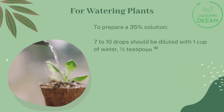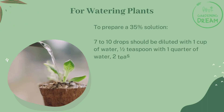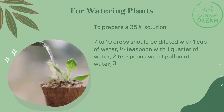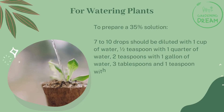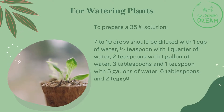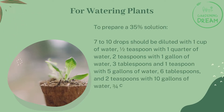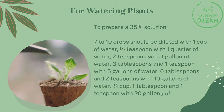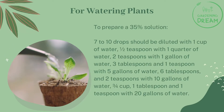For the 35% solution used for watering plants: seven to ten drops diluted with one cup of water; half teaspoon with one quart of water; two teaspoons with one gallon of water; three tablespoons and one teaspoon with five gallons of water; six tablespoons and two teaspoons with ten gallons of water; and three-quarters cup, one tablespoon, and one teaspoon with twenty gallons of water.